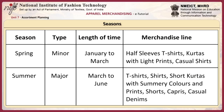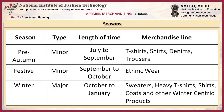For spring — a minor season — from January to March, the merchandise line includes half-sleeve T-shirts, kurthas with light prints, and casual shirts. For summer — a major season — from March to June, the merchandise line includes T-shirts, shirts, short kurthas with summery colors and prints, shorts, capris, and casual denims. For pre-autumn — a minor season — from July to September, the merchandise line includes T-shirts, shirts, denims, and trousers.